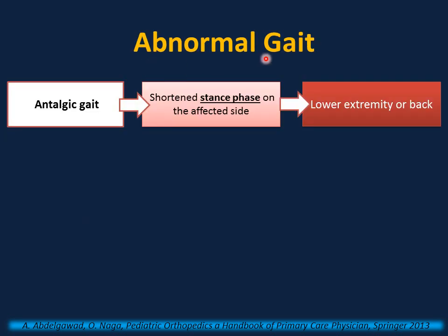I will give some examples of abnormal gait patterns. The first one is antalgic gait — limping due to pain in the lower extremity or the back. The characteristic of antalgic gait is a shortened stance phase. Stance phase is the time the limb is in contact with the ground, and in this case, because it's painful, it will be shortened — less than the healthy side to minimize the pain. If the pain is severe, the patient will not be able to bear weight at all.